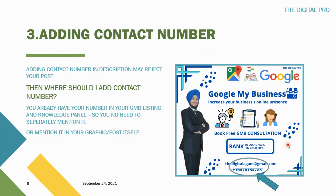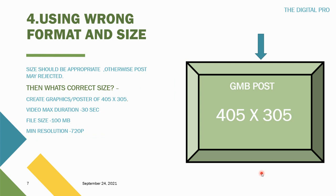The third reason is adding a contact number in the description, which is also wrong. You already have a contact number in your Google My Business listing, which shows up in the knowledge panel. You don't need to mention it in the description. If you want, you can use the 'Call Now' CTA button. Alternatively, you can mention your contact number directly in the post graphic itself.